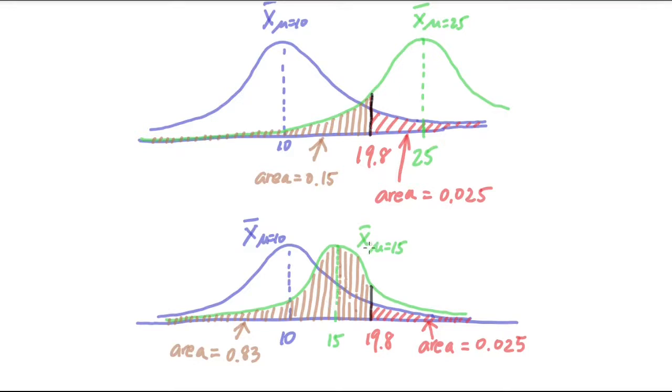And in this case, in the alternative condition that mu is equal to 15, then the area under the green curve on the left side of 19.8 would be this brown area, which has an area of 0.83. So this is a much bigger beta value under a different condition.